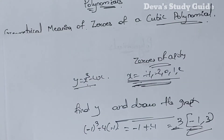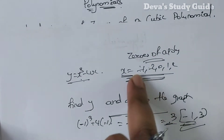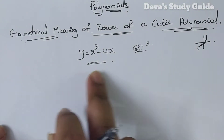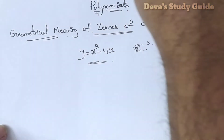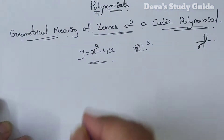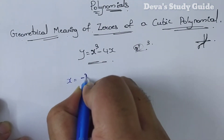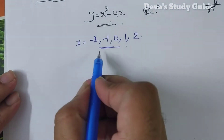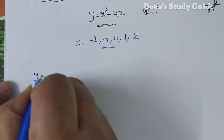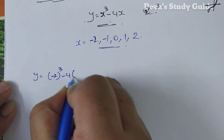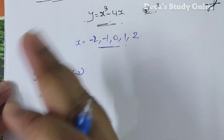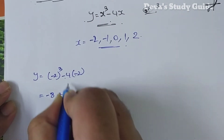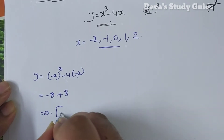So if we compute the values for the graph: for x equals minus 2, y equals minus 2 whole cube minus 4 into minus 2. That equals minus 8 plus 8, which is equal to 0. So y is equal to 0 when x is minus 2.